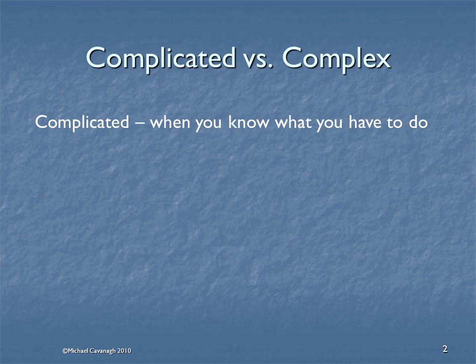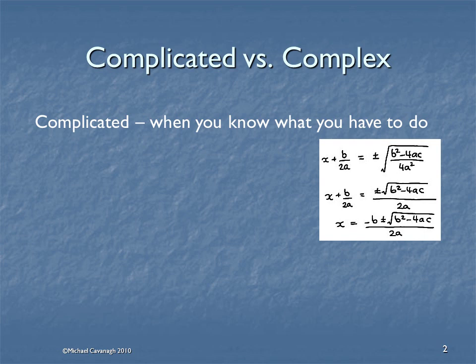First of all, a couple of definitions. Let's make it clear from the start that there is a difference between complicated projects and complex projects. Complicated projects are when you know what you have to do — there are a set of rules and things that you have to follow in order to achieve a solution. Quadratic equations are a good example: they are difficult, but there are a set of rules, and if you follow those rules you will be able to solve the equation.